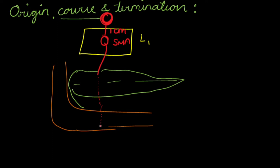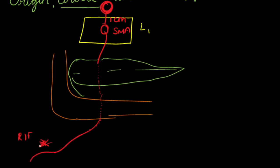The superior mesenteric artery crosses the third part of the duodenum and enters the root of the mesentery. It finally terminates in the right iliac fossa, where it gets anastomosed with the ileocolic artery.